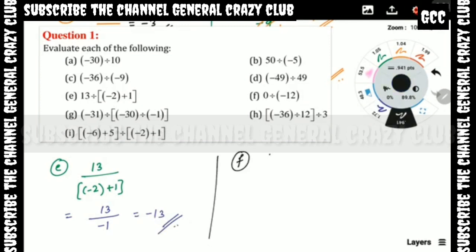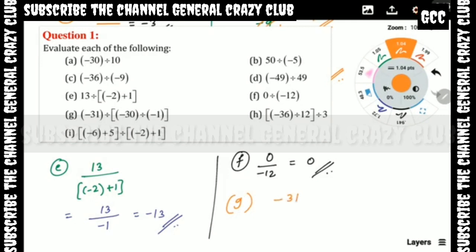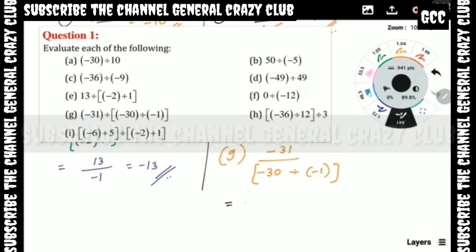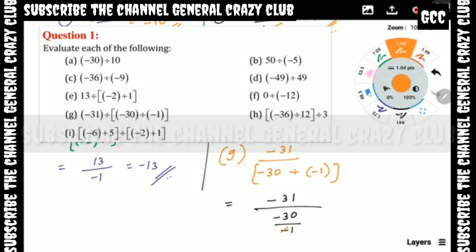Part F: zero divided by minus 12 — the answer is 0, simple. Part G: minus 31 divided by (minus 30 divided by minus 1). Minus minus cancel gives plus 30, so minus 31 plus 30.